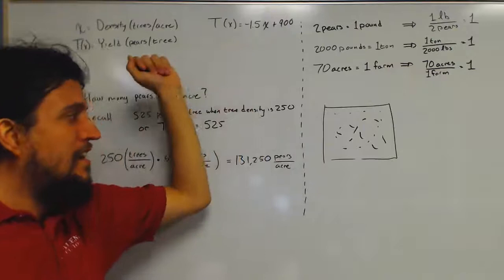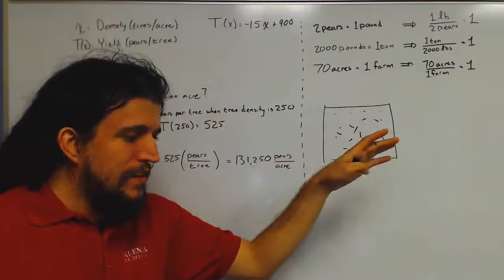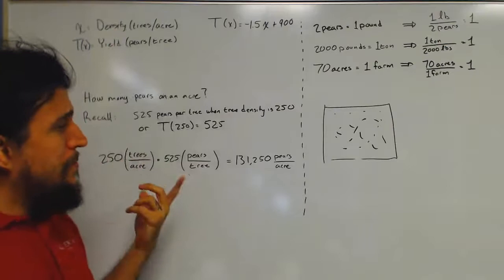But now we've got to come up with the total number of pairs on this entire acre. So how do we attack this? Well the answer is probably more obvious than it looks.